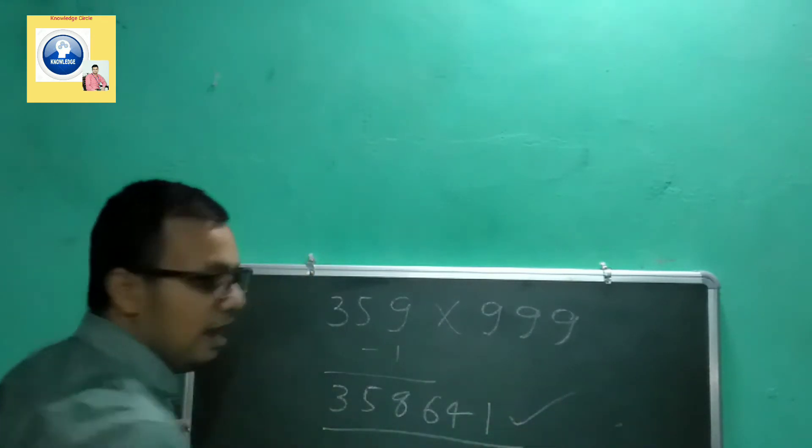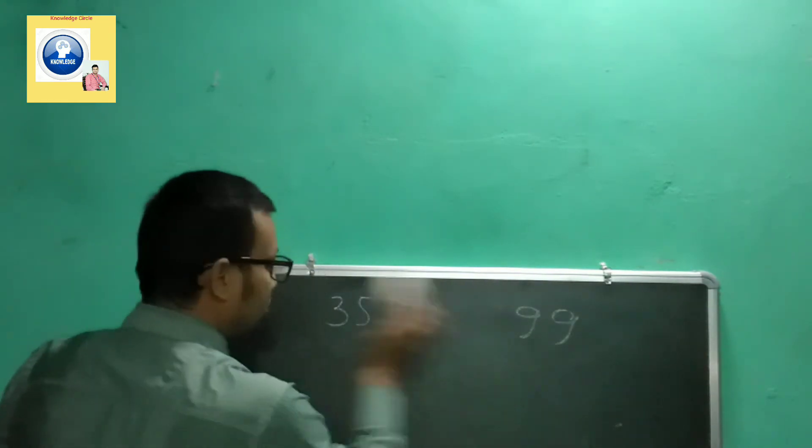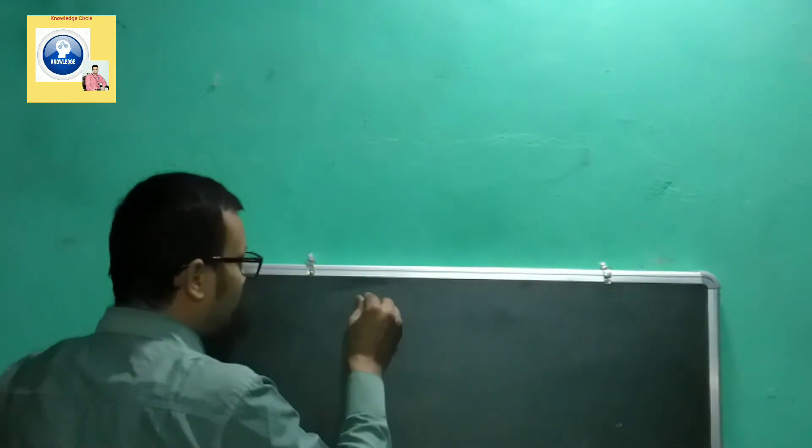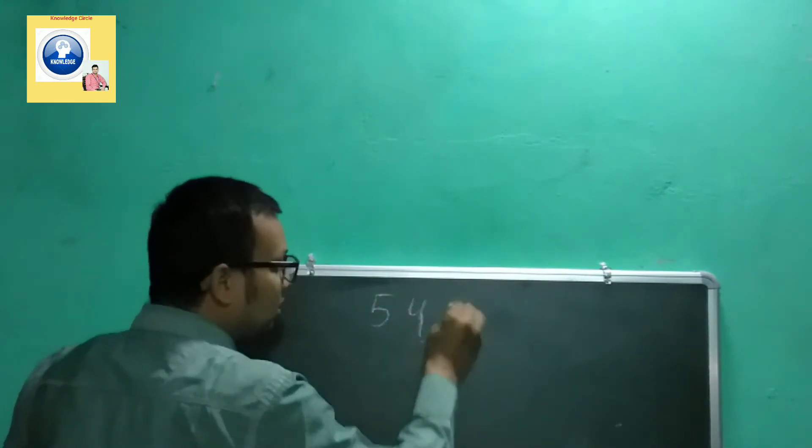If you want to check the two-digit one, let's do that also. For two digits, suppose it is 54 into 99.